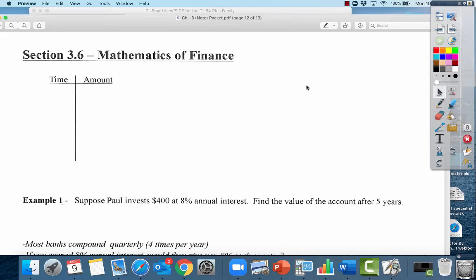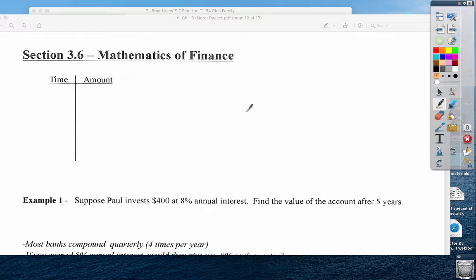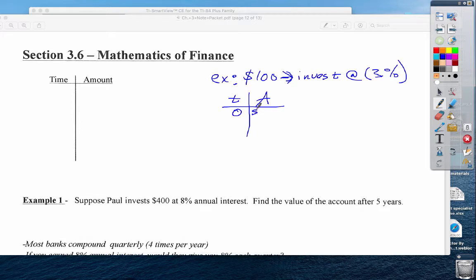We're going to do our lesson for 3.6, mathematics of finance, how to utilize some of this log information. Take out the last part of chapter 3. We're going to be talking about some money. Let's say we got $100 for our birthday and we're going to invest it into an account at 3%. What we have is the time and then the amount. At time 0 we have $100.